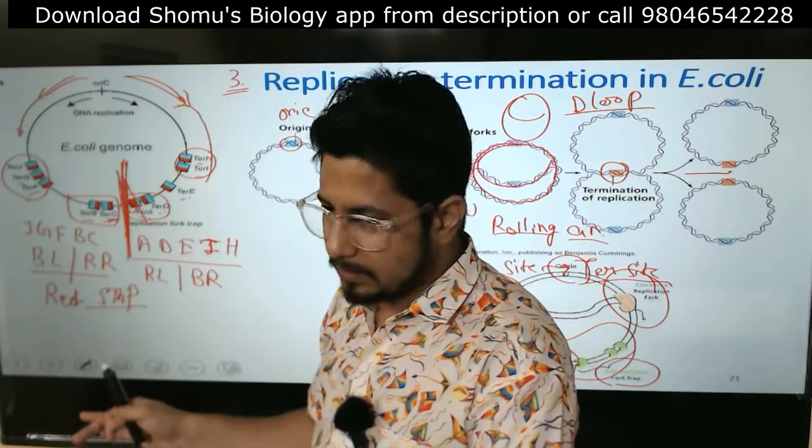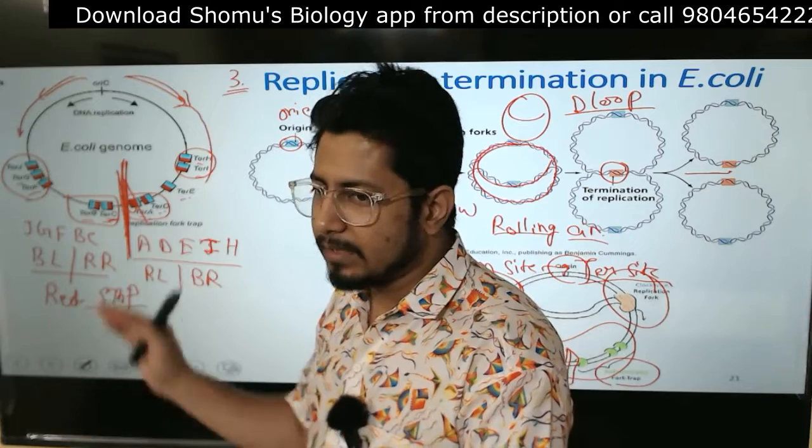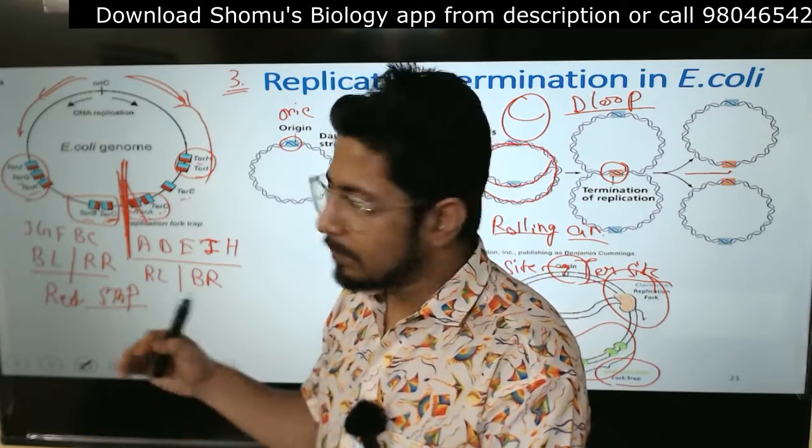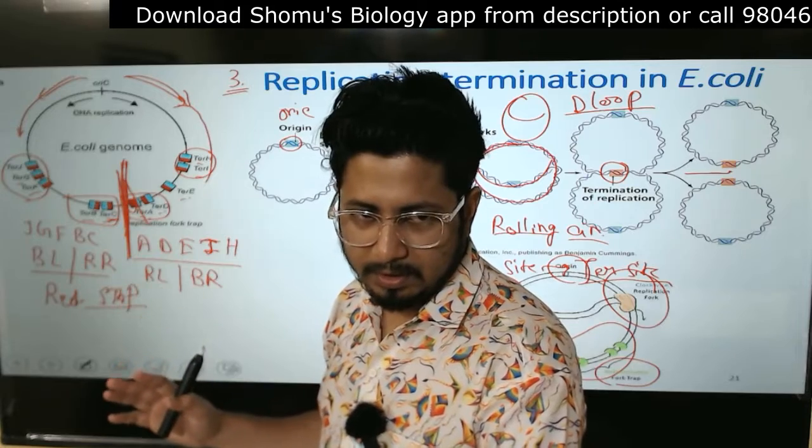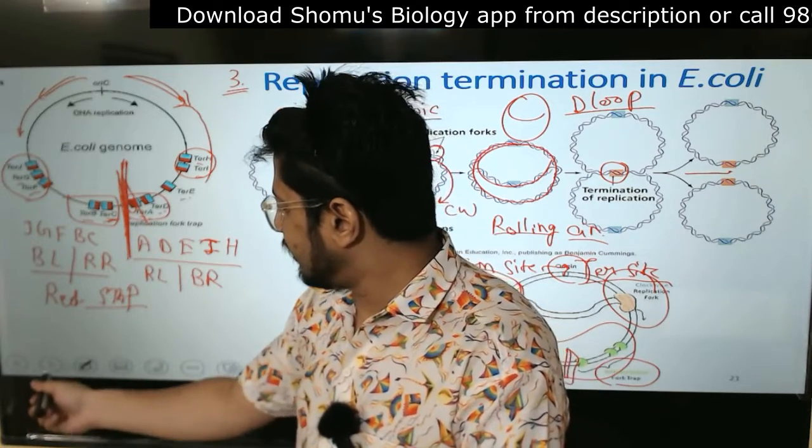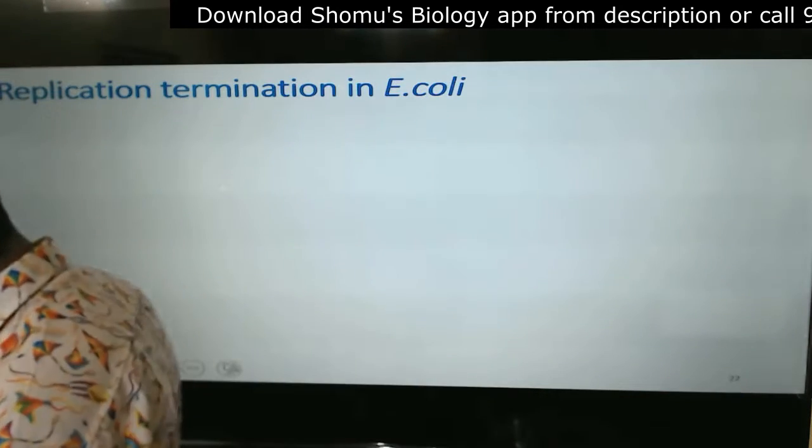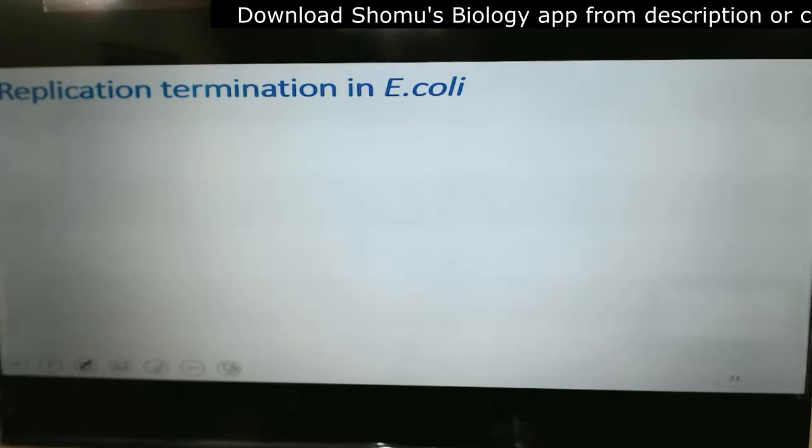This is where the fork stops, and once the fork stops means the replication stops. Then there's separation of the strands. Sometimes they need topoisomerase to cleave the strands to separate the catenated form of the DNA. Now what do these ter sequences do? Why do ter sequences act as a fork trapper?